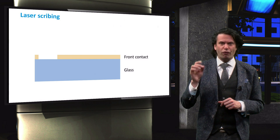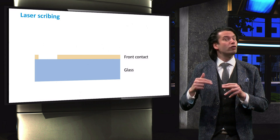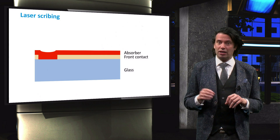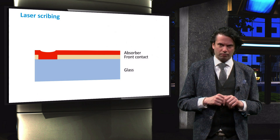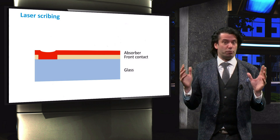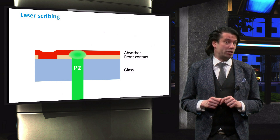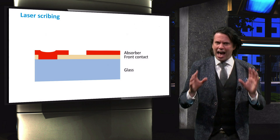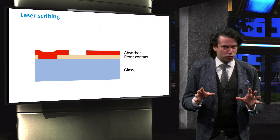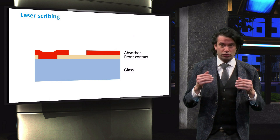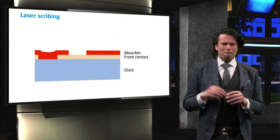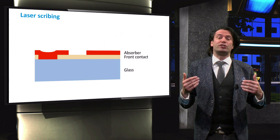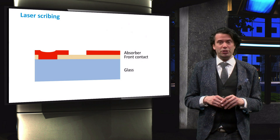Then the photoactive layers are deposited on top of the front contact, creating a thin film and filling the gap left by the first laser scribe. After the deposition of the absorber layer, the second laser scribe, called P2, is performed. The wavelength of the laser has to be chosen such that it is not absorbed by the glass and transparent front contact, but is absorbed in the absorber layer. For example, in the case of an amorphous silicon absorber layer, green laser light can be used.